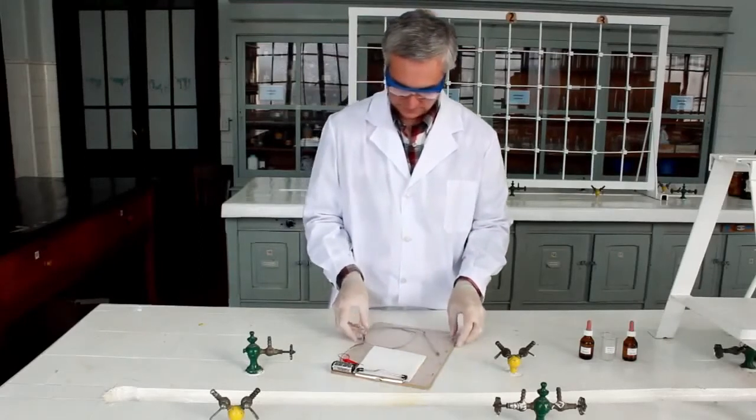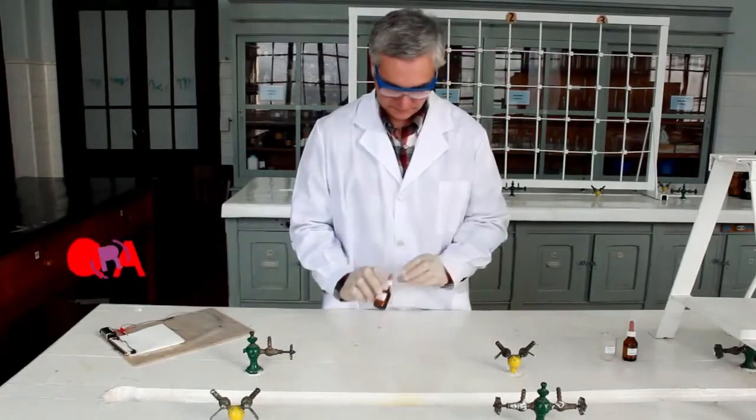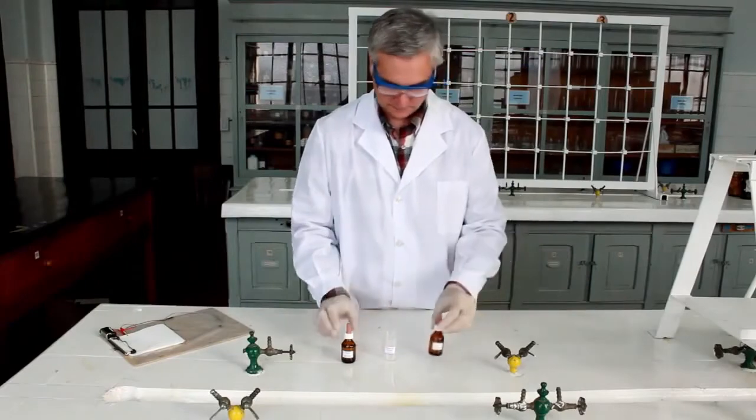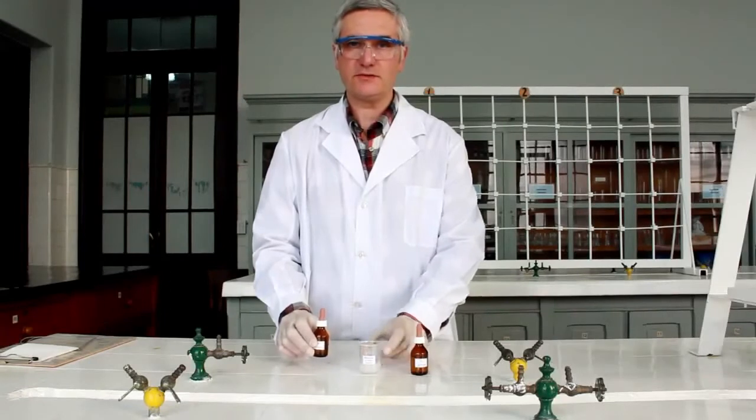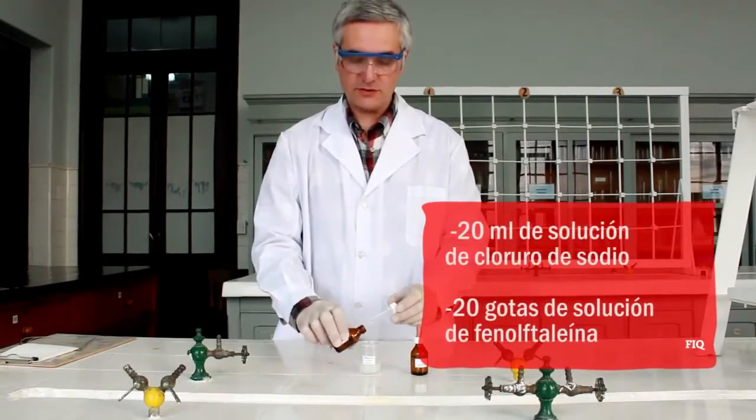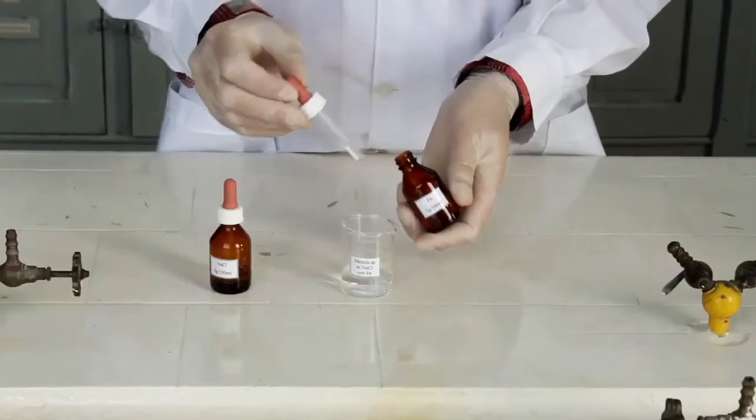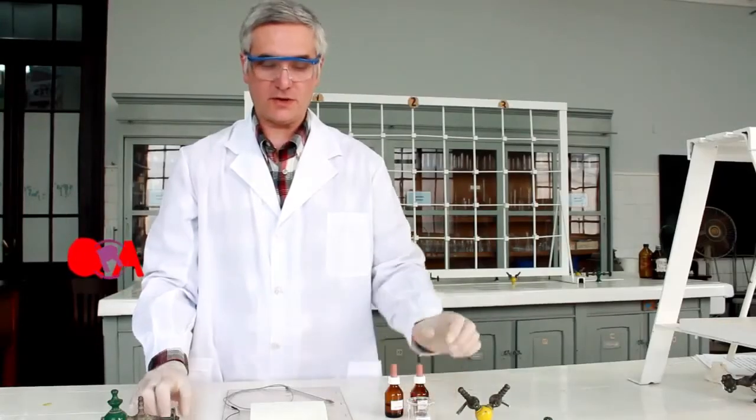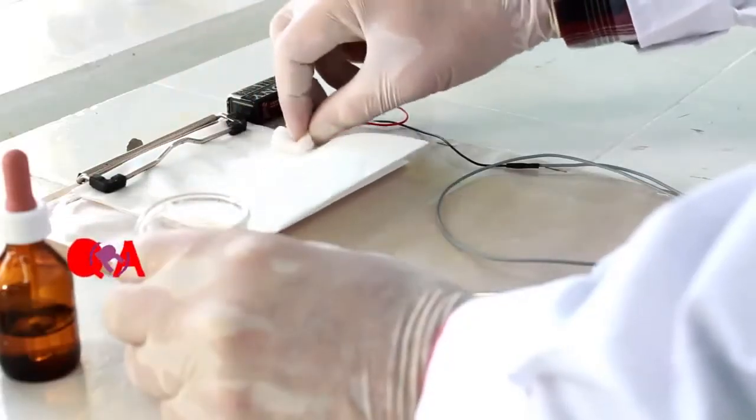Ahora debemos preparar una solución de cloruro de sodio en agua a la que se agrega la solución del indicador ácido base. A continuación se toma un vaso de precipitado de 50 mililitros, se le agrega 20 mililitros de solución de cloruro de sodio y 20 gotas de la solución de fenolftaleína. Finalmente se embebe el papel con la mezcla preparada. Es importante que quede bien húmedo.